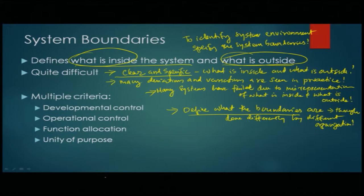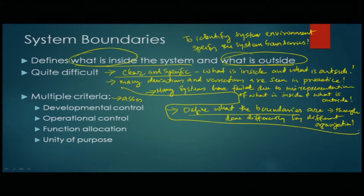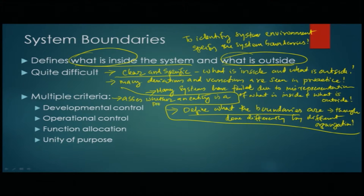There are a few criteria that help us make this decision. The criteria is to assess whether an entity — we have already seen what an entity is — is a part of the system. Entity is a part of the system. The criteria is to assess whether it is part of the system or not.